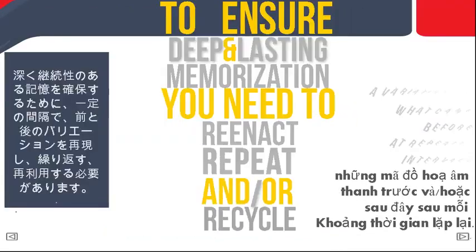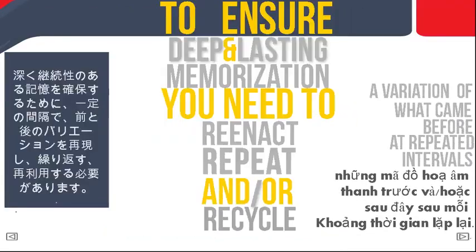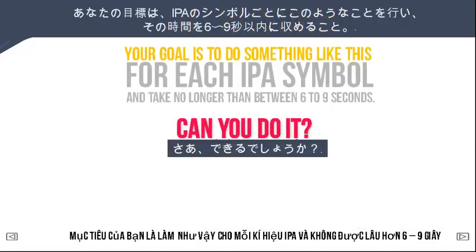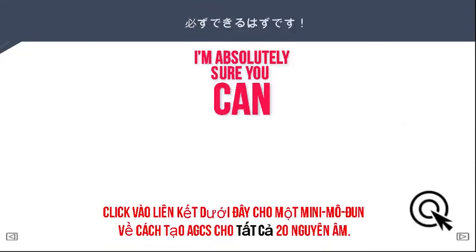To ensure deep and lasting memorization, you need to reenact, repeat, and recycle variations of the preceding at repeated intervals. Your goal is to do something like this for each IPA symbol and take no longer than between 6 and 9 seconds. Can you do it? I'm absolutely sure you can.